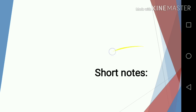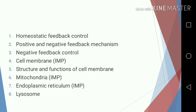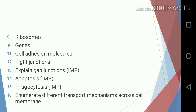Short notes: one, homeostatic feedback control; two, positive and negative feedback mechanism; three, negative feedback control; four, cell membrane; five, structure and functions of cell membrane; six, mitochondria; seven, endoplasmic reticulum; eight, lysosome; nine, ribosomes; ten, genes.